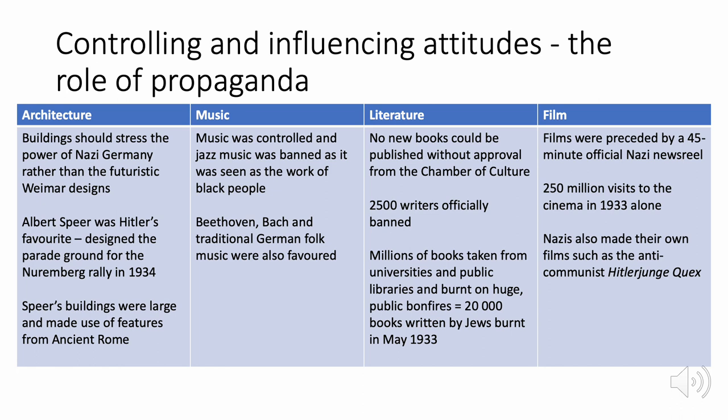No new books could be published without approval from the Chamber of Culture. Writers were banned and there were famous book-burning bonfires — books opposing Nazi views were taken from universities, public buildings, and libraries and burned, especially books written by Jewish people. Films were also controlled: in Nazi Germany, every film was preceded by a 45-minute official Nazi newsreel promoting the Nazi outlook. In 1933 alone there were 250 million cinema visits, meaning the average German went to the cinema three times that year — 250 million exposures to that newsreel.